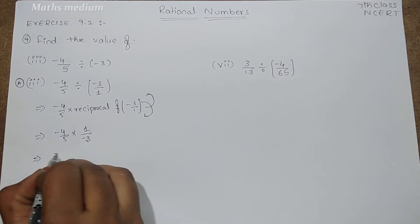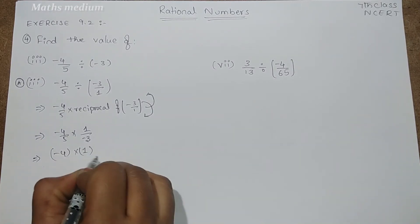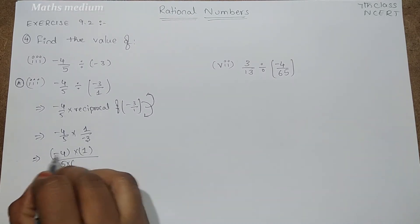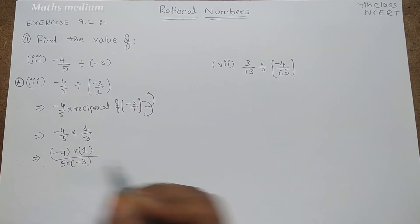So -4 into 1, it is same like multiplication of rational numbers. Both numerators multiply and both denominators multiply respectively.